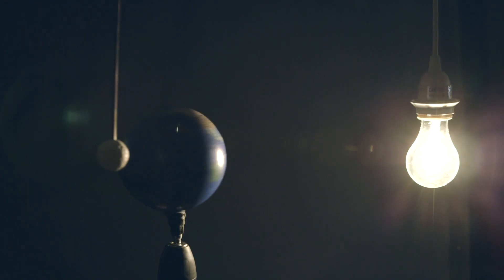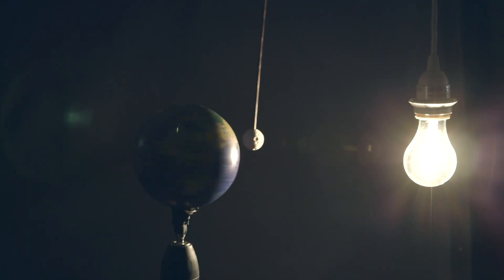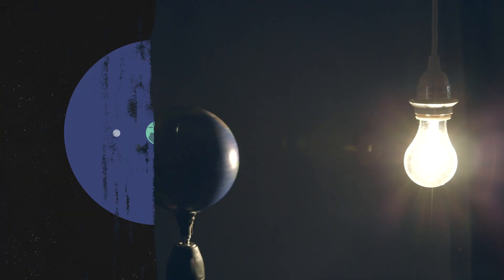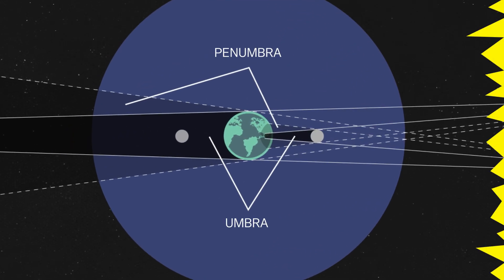A solar eclipse happens when the moon's shadow falls somewhere on the surface of Earth, and a lunar eclipse is the opposite, when the Earth's shadow falls on the moon. The two sections of the shadow, the dark umbra and the partially shaded penumbra, their placement determines which type of eclipse we can see from Earth.